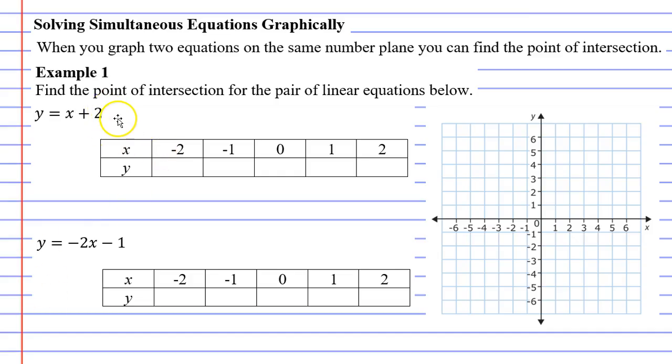For example one we're going to find the point of intersection for a pair of linear equations. The linear equations are y equals x plus two and y equals negative two x minus one. Let's start with y equals x plus two.